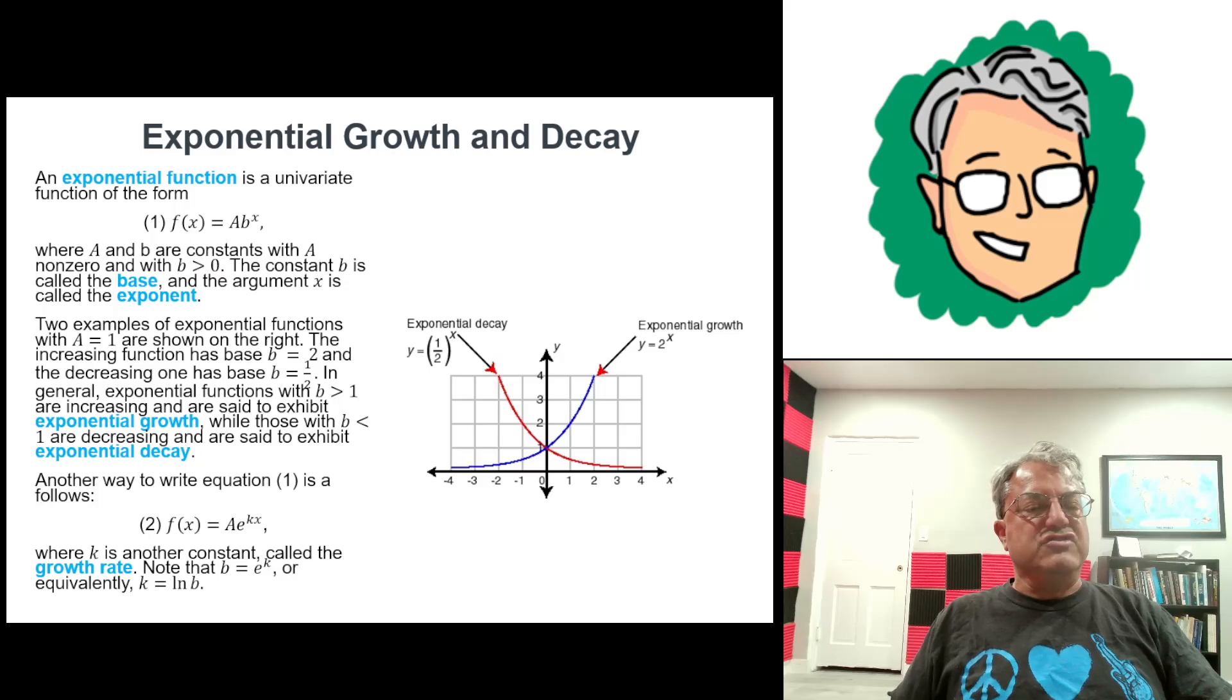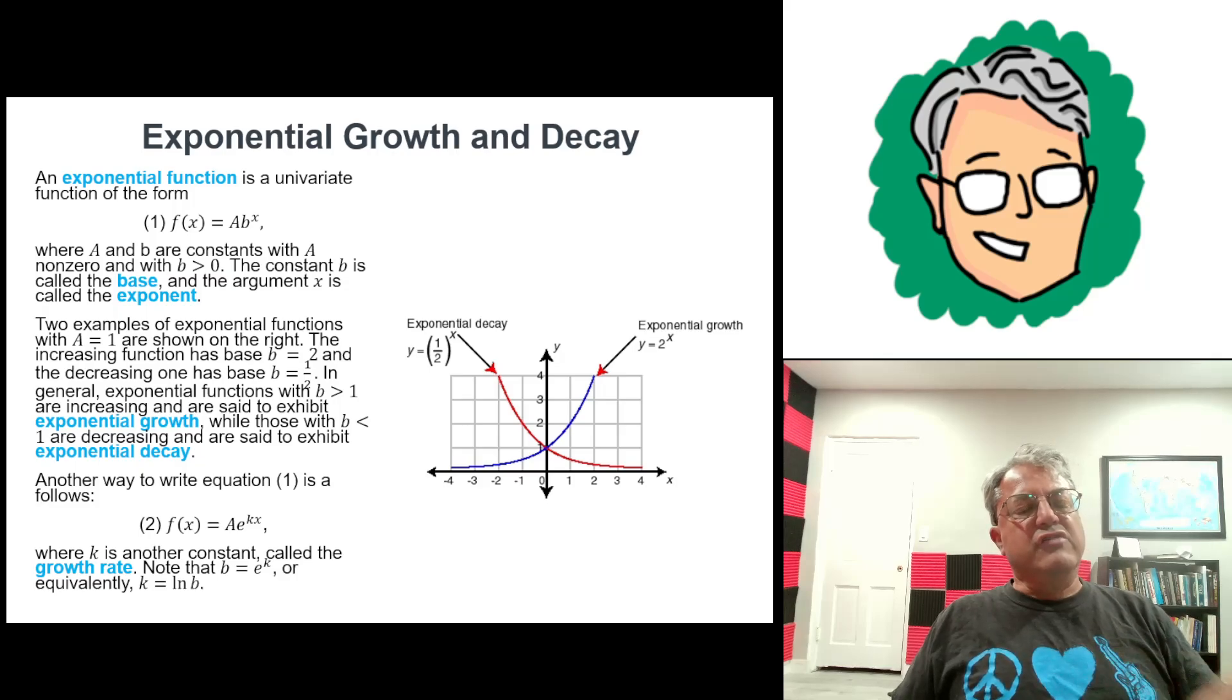So it just looks either, if it's increasing, if b is greater than 1, that b is called a base. If the base is greater than 1, then we have what's called exponential growth, and it looks like the blue curve. And for both of these curves, a is 1, but it doesn't have to be. And then if b is less than 1, then we get what's called exponential decay, which is like the red curve.